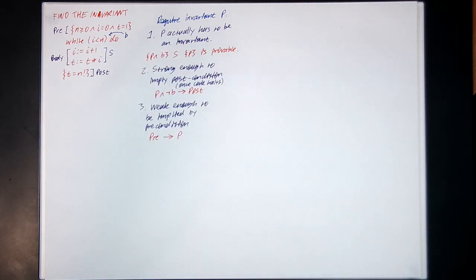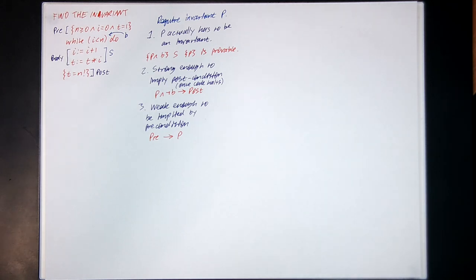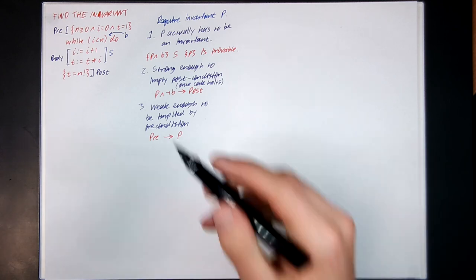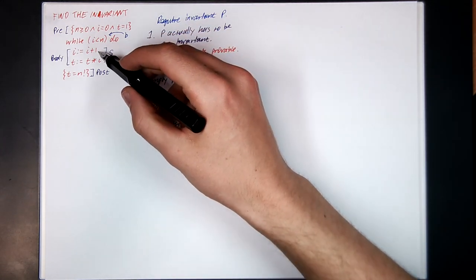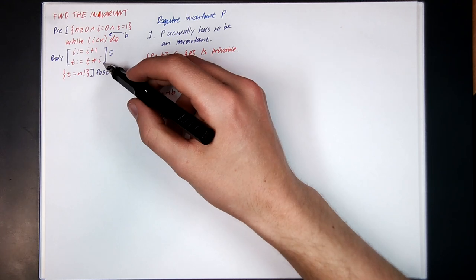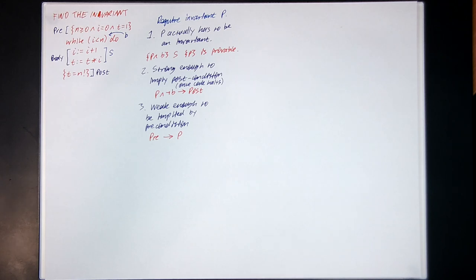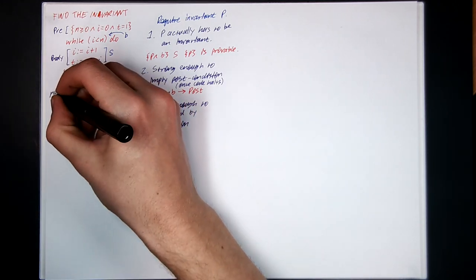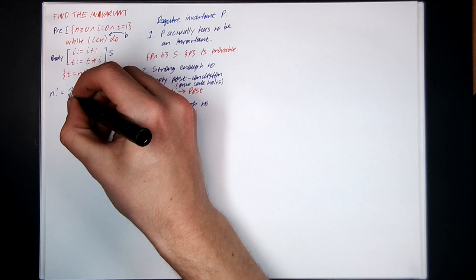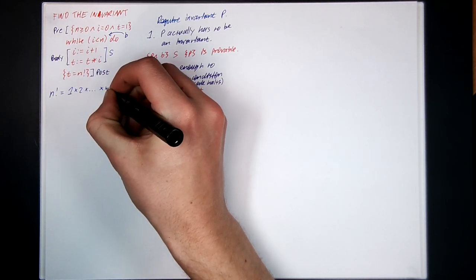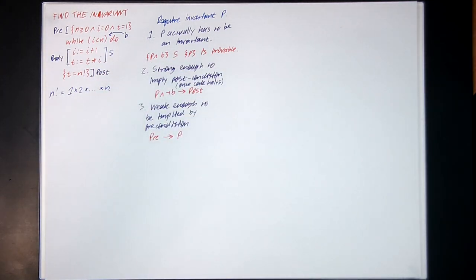Here we've got some code, and the idea is this code is supposed to compute the factorial of a number. The precondition is that n is greater than or equal to 0, i is 0, and t is 1. While i is strictly less than n, it increases i by 1 and then multiplies t by i. It continues doing this in a loop until this condition fails, and then hopefully at the end t is equal to n factorial. As a reminder, n factorial is defined to be 1 times 2 times ... times n — a product of the first n numbers.